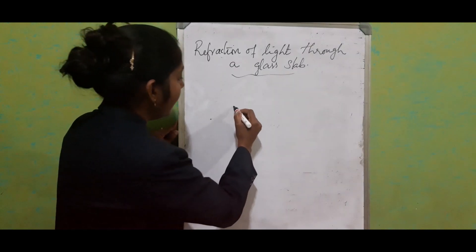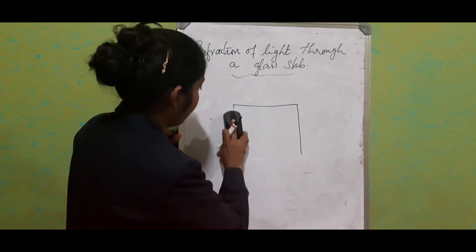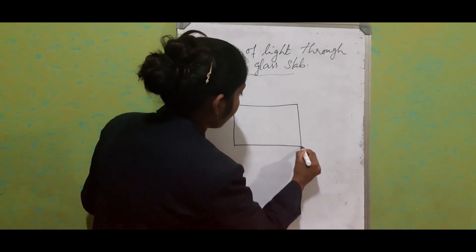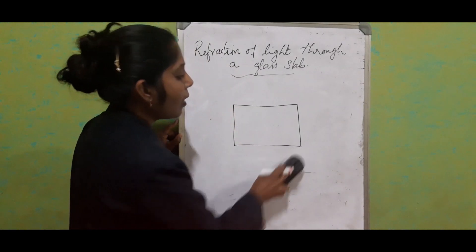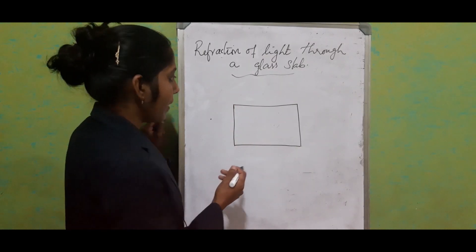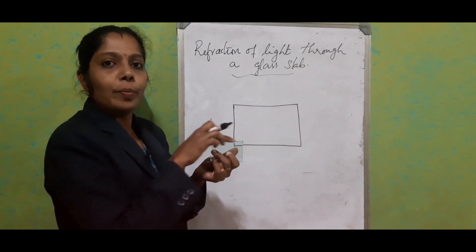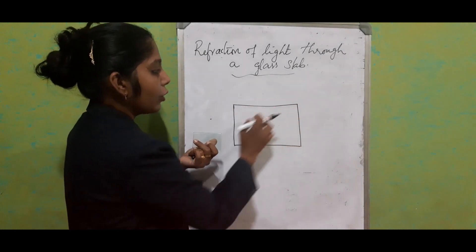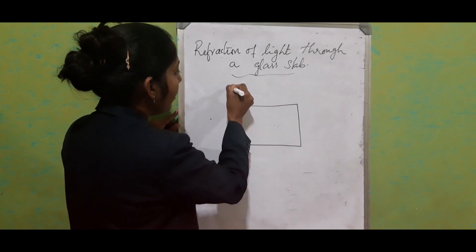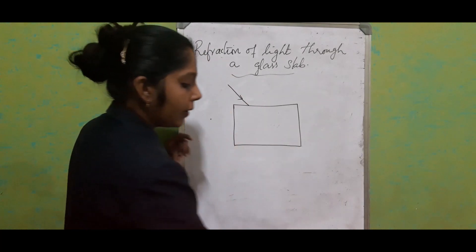Just consider this is a glass slab. I have drawn the outline. Only in this way we can show it in a two-dimensional way. So this is a glass slab — this is the top portion and this is the bottom portion. We are going to allow the light to be incident from this way, that means from the top.